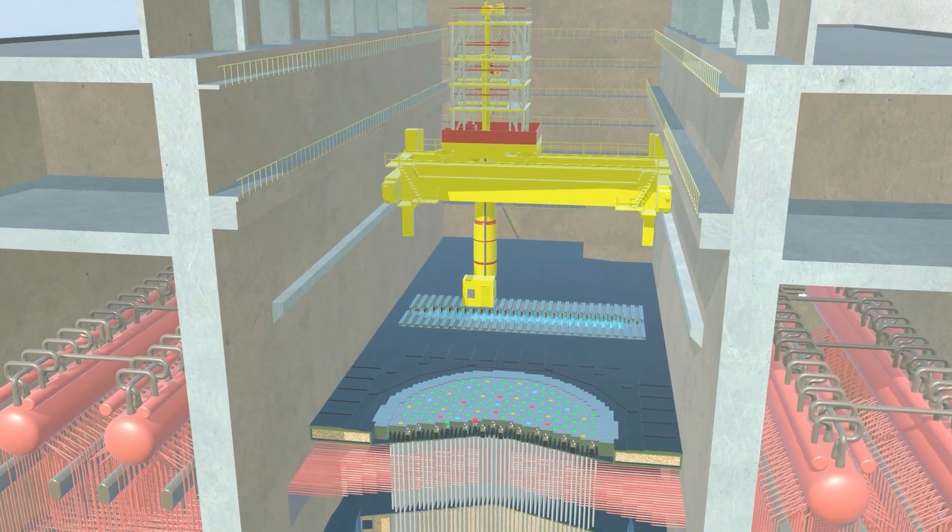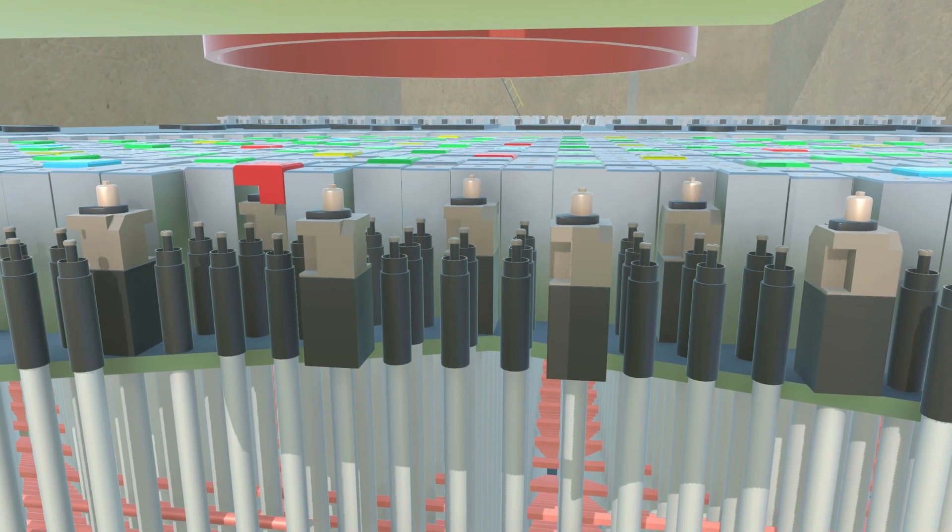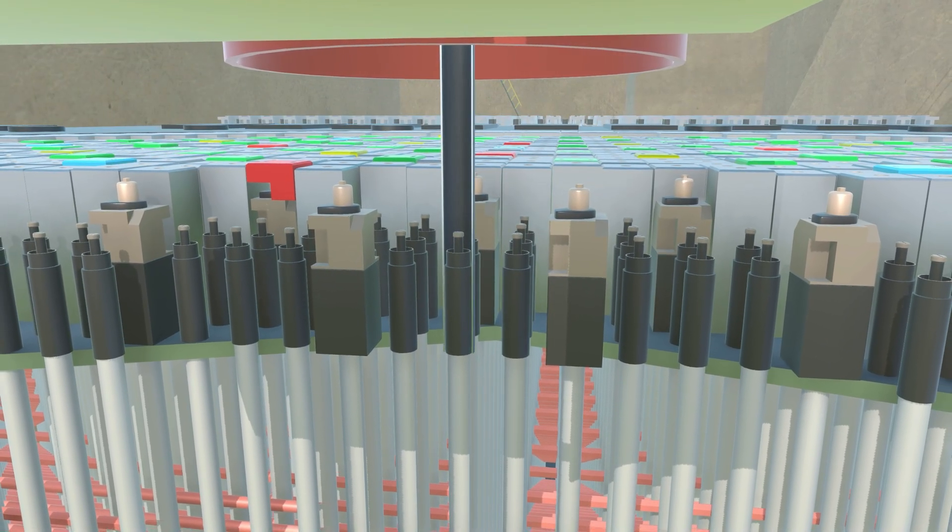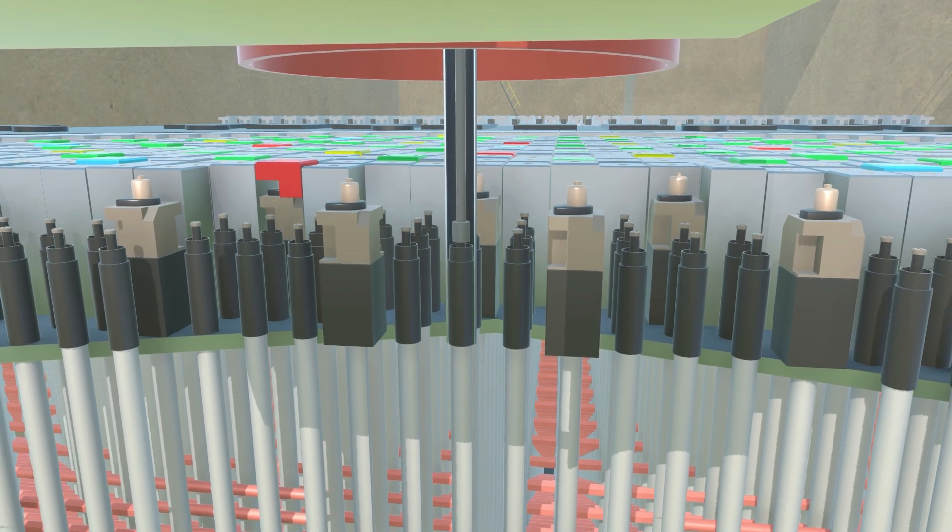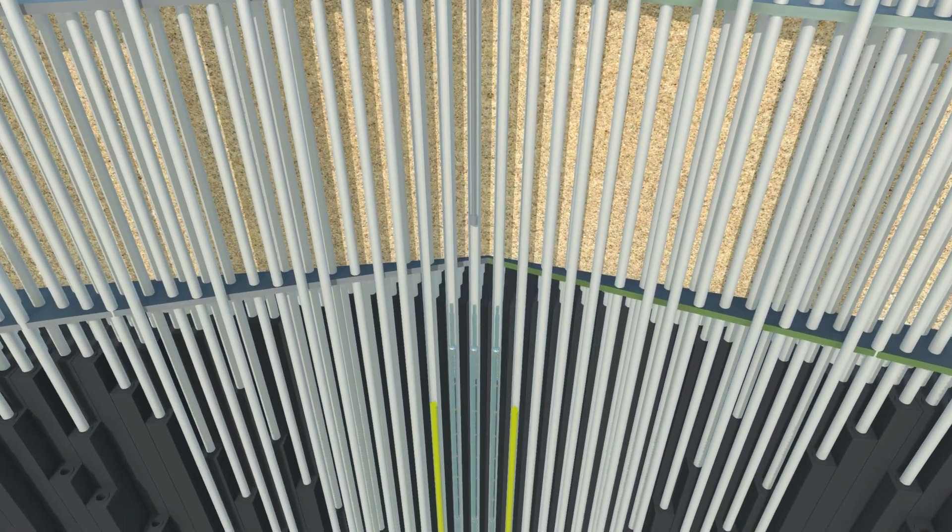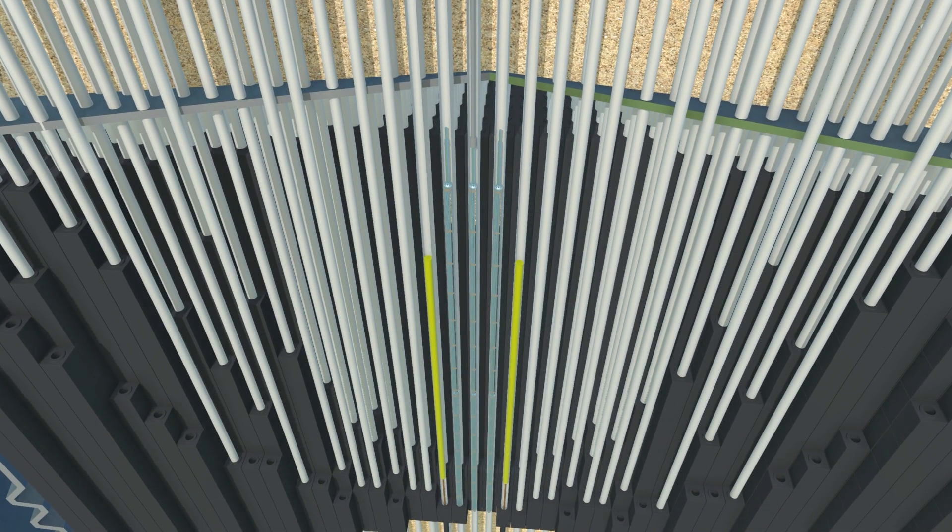Spent fuel assemblies can be replaced in the RBMK reactor at full operation by means of a special loading machine moving in the reactor hull. During the exchange, the loader is driven to the specified coordinates, hermetically connected to the channel, and after pressure equalization and release of the channel seal, the spent fuel assembly is pulled out and a fresh assembly is inserted in its place.